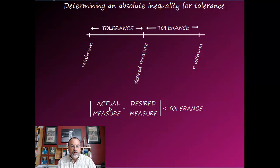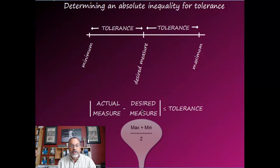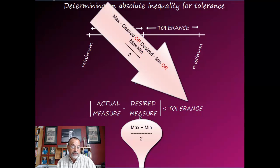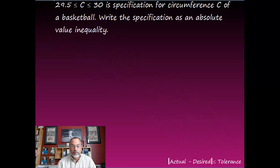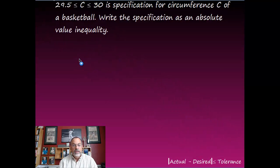The actual measurement is always the variable, the desired measurement goes in the middle, and the tolerance goes on the right side of the inequality. Remember there are three ways to figure out the tolerance. Let's look at an example.